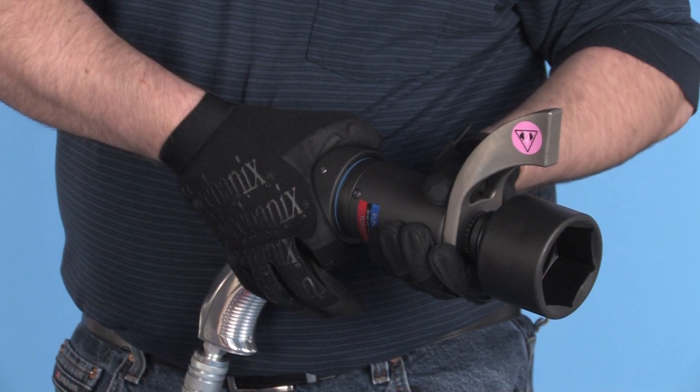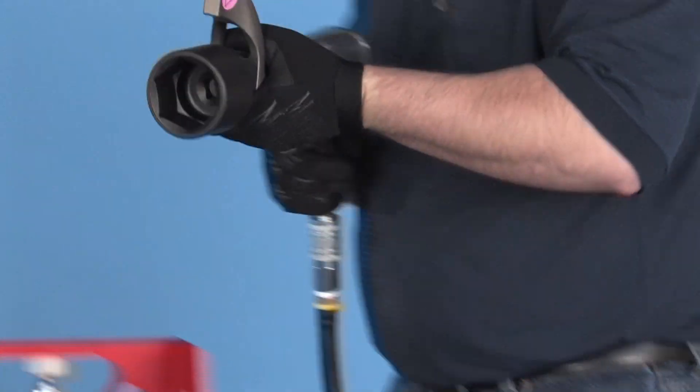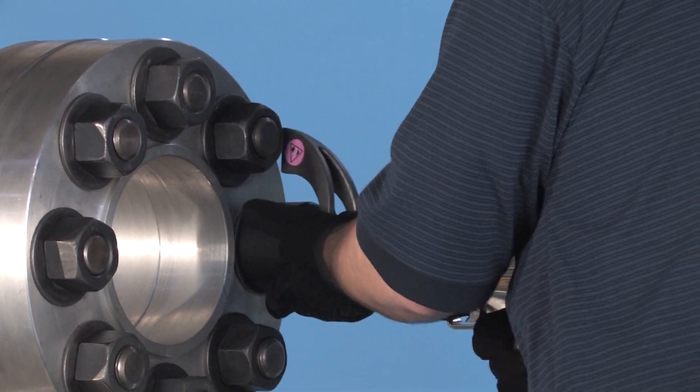Shift the tool to the low-speed torquing mode. Engage the nut and turn the reaction arm so that it blocks against the next nut.